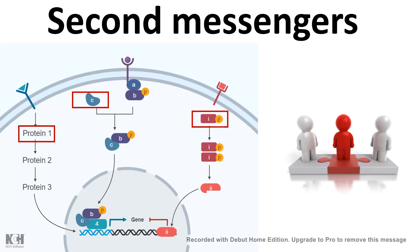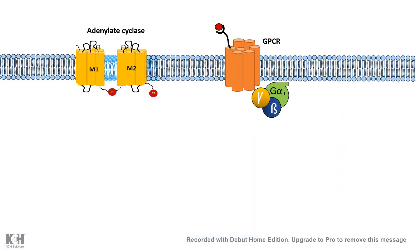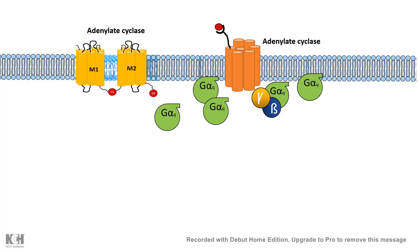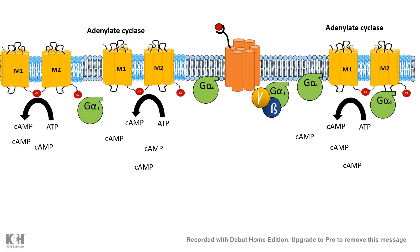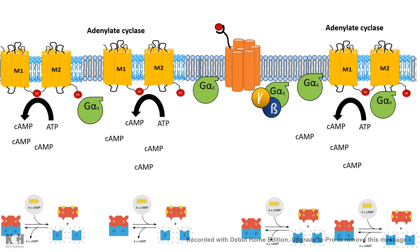One key aspect of second messengers is that they amplify the signal. Taking the example of G protein coupled signaling: a ligand binds to the GPCR, which allows activation of several G-alpha subunits. Several G-alpha subunits can in turn activate several adenylate cyclase enzymes. Once many adenylate cyclase enzymes are activated, several rounds of cyclic AMP production occur.